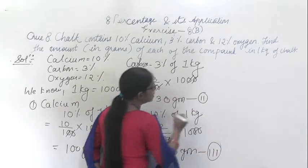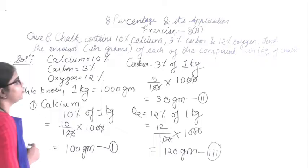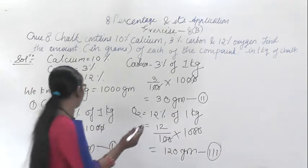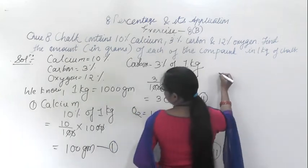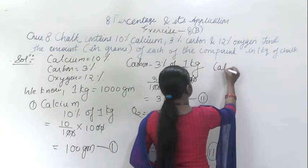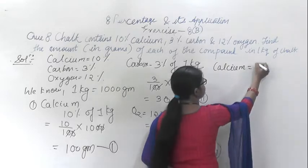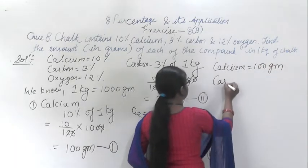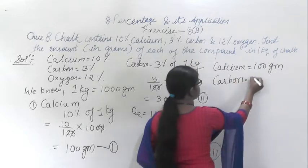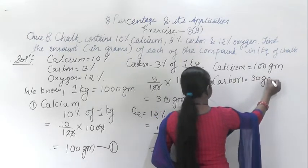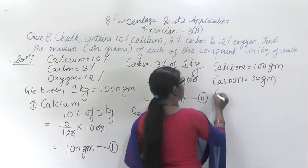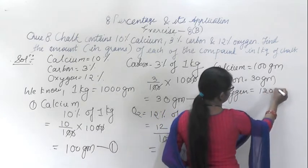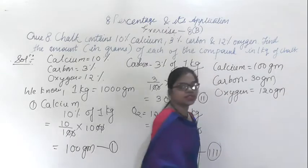So the answers for the amount of each compound in 1 kg of chalk are: calcium is 100 grams, carbon is 30 grams, and oxygen is 120 grams. This is the answer.